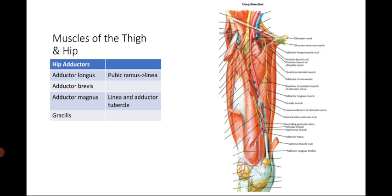For the hip adductors, we have the adductor longus, adductor brevis, and adductor magnus, as well as the smallest one, the gracilis.